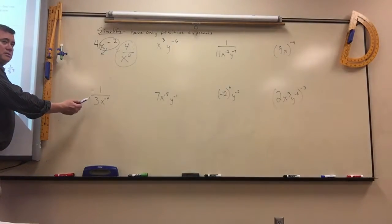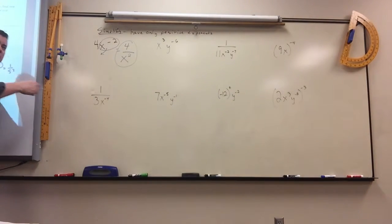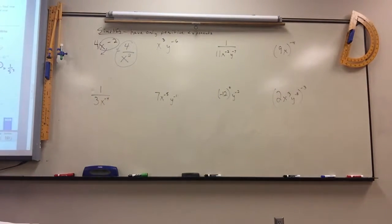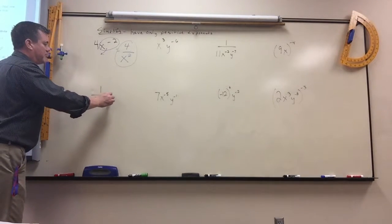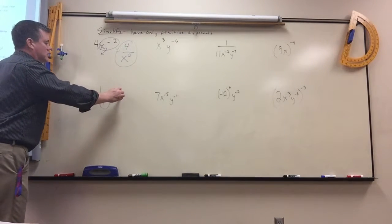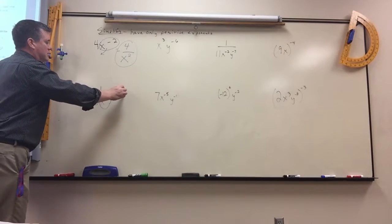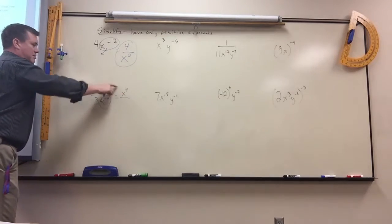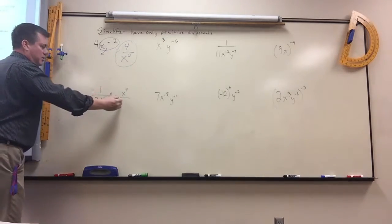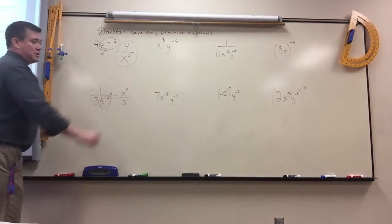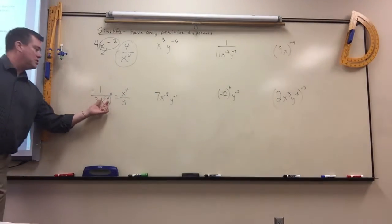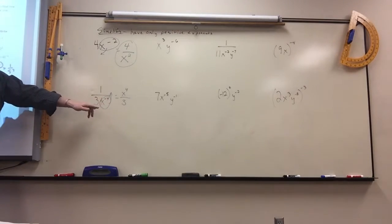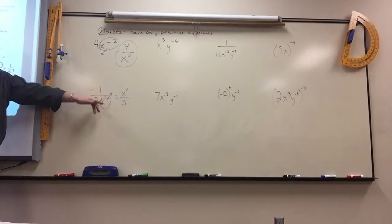This one, there's really nothing we can simplify, but you just have to move this up to the top. It would be x to the fourth on top, changing from negative to positive. The three would stay where it's at. Remember, it's just the one that the negative is hooked to that moves.